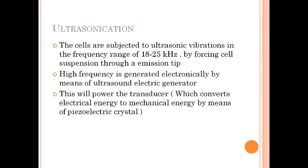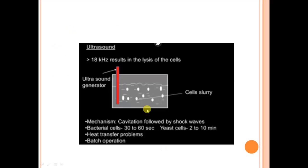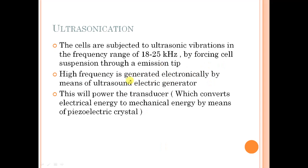The second system is ultrasonication. Here the cell is subjected to ultrasonic vibration. The frequency range commonly used is 18 to 25 kilohertz. The cell suspension is forced through an emission tip — an ultrasonic probe — operating at high frequency. This high frequency is generated electronically by an electric generator, which powers a transducer that converts electrical energy to mechanical energy. A piezoelectric crystal is used to generate these ultrasonic waves, producing vibrations that cause the cells to break open.